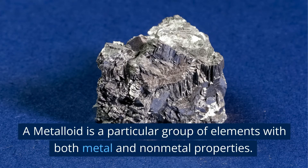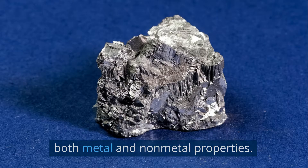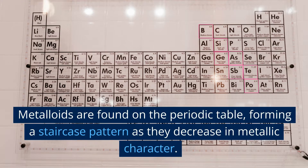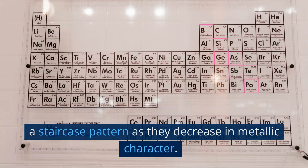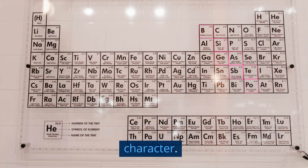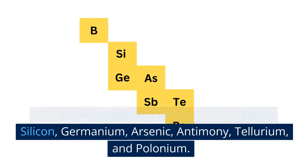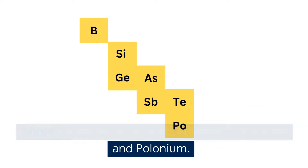A metalloid is a particular group of elements with both metal and non-metal properties. Metalloids are found on the periodic table, forming a staircase pattern as they decrease in metallic character. The metalloid element family includes boron, silicon, germanium, arsenic, antimony, tellurium, and polonium.